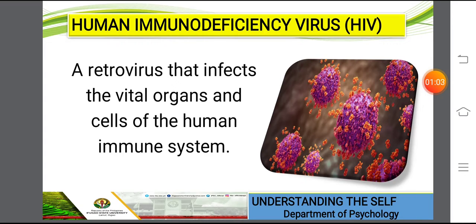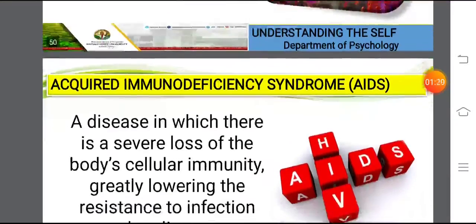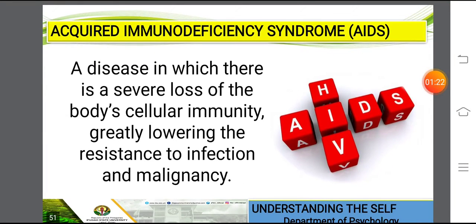HIV is a retrovirus that infects the vital organs and cells of the human immune system. This starts and targets our sexual organs and affects the human immune system. We also have Acquired Immunodeficiency Syndrome or AIDS. This is a disease in which there is a severe loss of the body's cellular immunity, greatly lowering the resistance to infection and malignancy.